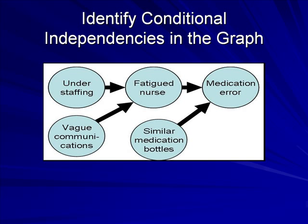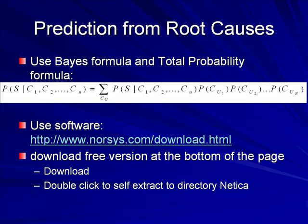However, suppose that even when the nurse is not fatigued, vague communications may lead to medication errors. Therefore, the assumption of conditional independence of vague communication and medication error is not met. The causal model behind the root cause analysis can be used to predict the probability of the sentinel event, and this probability can be compared to the intuitions of the investigative team. The probability of sentinel events can be calculated from each of the direct causes, and the probability of direct causes can be calculated from their root causes.